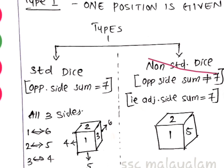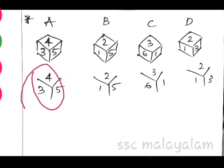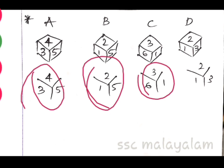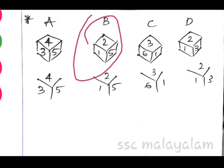I will show you how to identify the same dice. There are 4 dice shown here — some standard and some non-standard. For a standard die, if we add adjacent sides and they sum to 7, that is non-standard. If opposite sides sum to 7, that is standard. Let's check options A and B: we add adjacent sides and get 7, so that is non-standard.